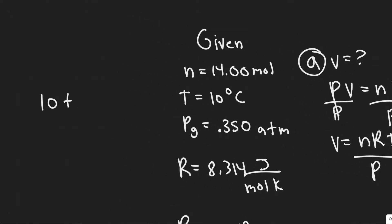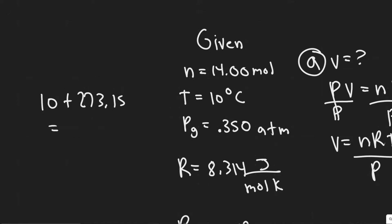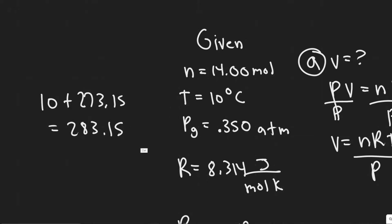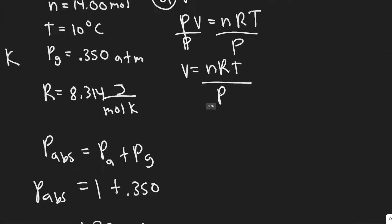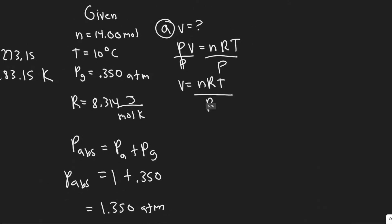We also need to convert temperature to Kelvin. To convert from Celsius to Kelvin, just add 273.15. So 10 degrees Celsius becomes 283.15 Kelvin. Now we have everything in the correct units and can plug into the formula.